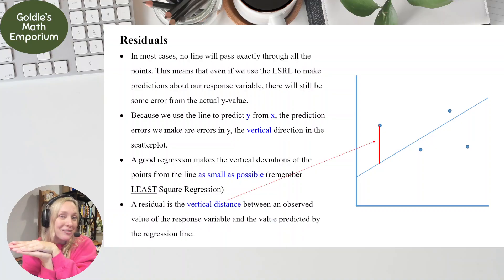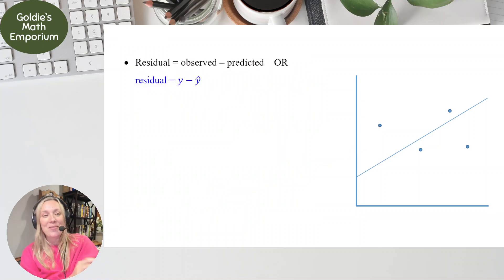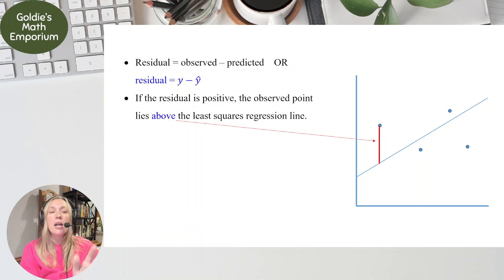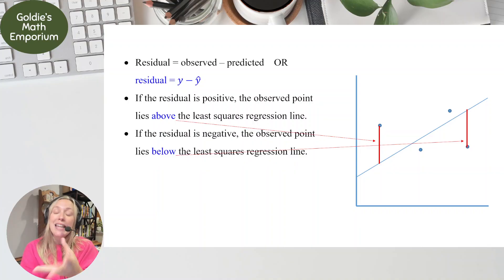What is that vertical distance? Well, it's residual. It's that vertical distance between the observed value of the response and the value predicted by the regression line. So the formula for it, we actually don't have a symbol for residual. We just call it residual. But the formula for it is taking the observed value minus the predicted value, or y minus y hat. Y being the original data point, y value, and y hat being the predicted y value. If the residual is positive, that means the observed point lies above the regression line, and if it's negative, that means it lies below the regression line.